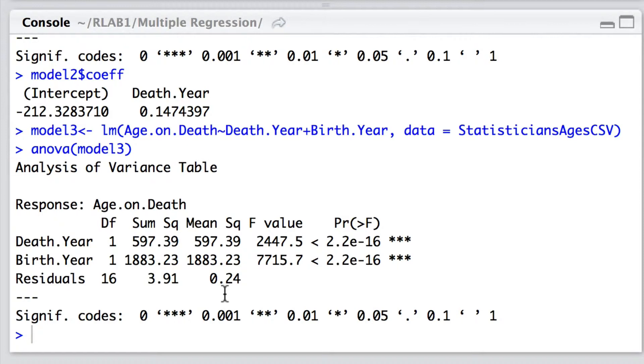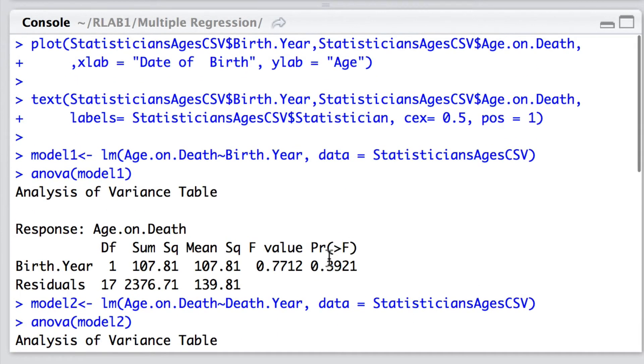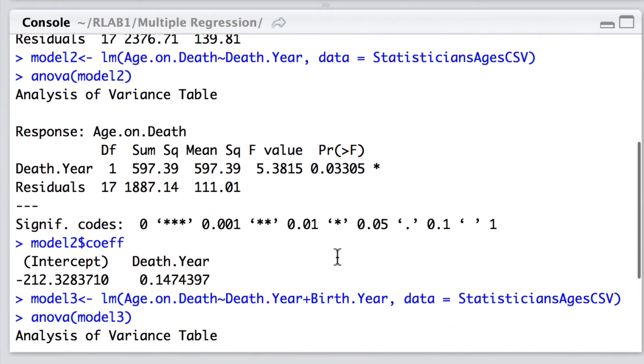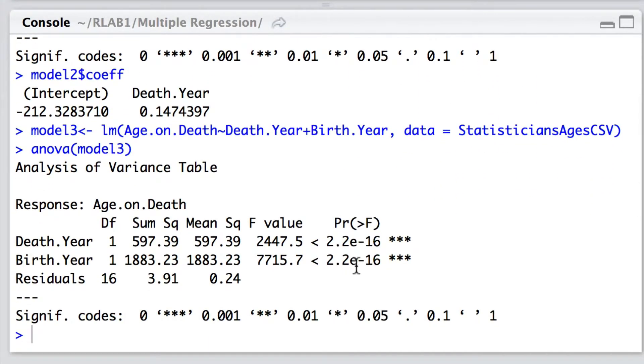Now you'll note that here we're using type 1 sum of squares by default in R and it seems that both death year and birth year in these cases are both highly significant. Well why is birth year gone from low significance here to very highly significant?